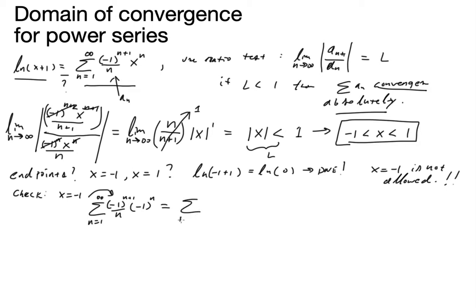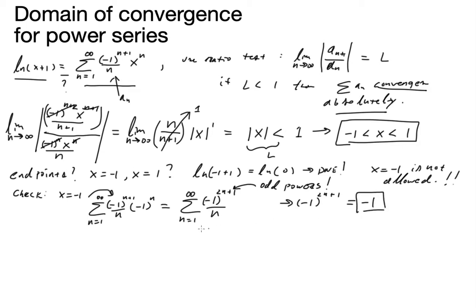Combining the powers gives negative 1 to the 2n plus 1. Those are all odd powers of negative 1, so negative 1 to the 2n plus 1 equals negative 1 everywhere — it's a constant. We can write this as negative times the sum from n equals 1 to infinity of 1 over n, which is a divergent p-series.